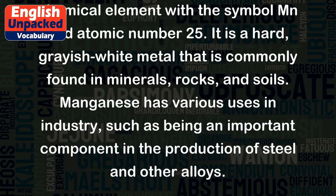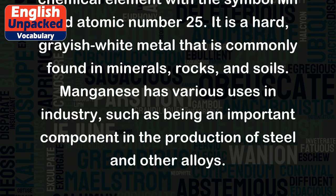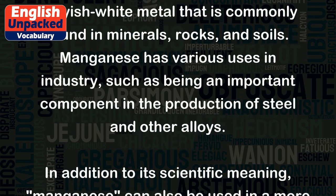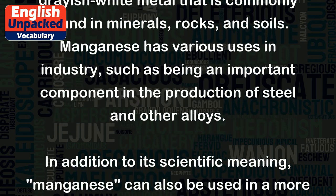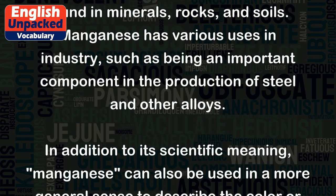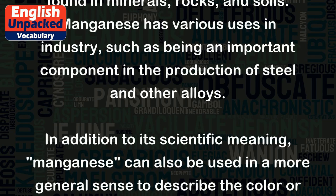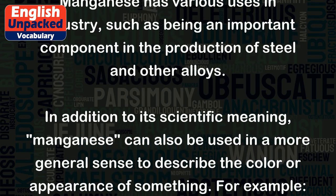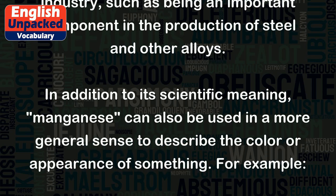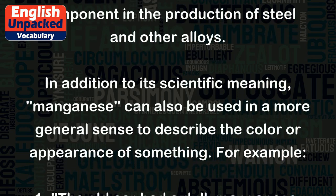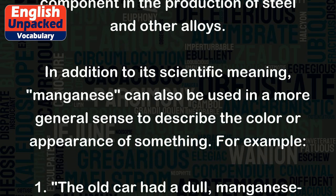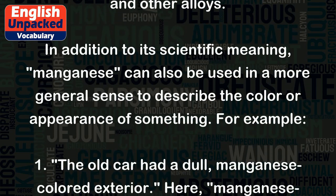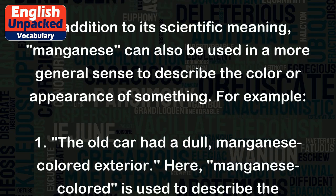Manganese has various uses in industry, such as being an important component in the production of steel and other alloys. In addition to its scientific meaning, manganese can also be used in a more general sense to describe the color or appearance of something.